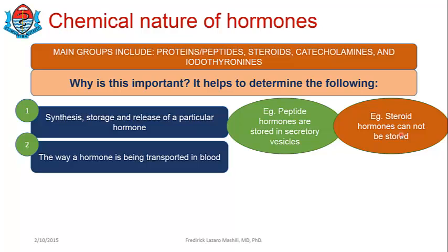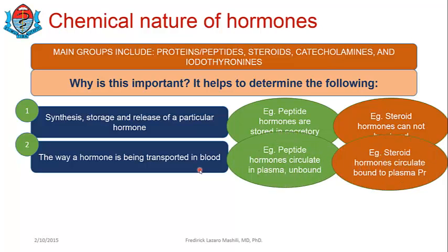Number two, by knowing the chemical nature of hormones, one can tell how a hormone is transported in blood — whether it is transported free or bound to a plasma protein. Again, insulin as a peptide hormone is a good example: it circulates in plasma unbound and does not need any carrier protein.